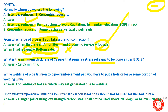What is the minimum thickness of carbon steel pipe that requires stress relieving as per ASME B31.3? According to the clause in ASME B31.3, the minimum thickness at which stress relieving must be done is 19.5 mm.